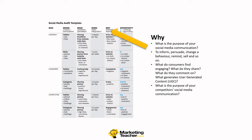Finally, Why. What's the purpose of your social media communication — is it to inform, to persuade, to change behavior, to remind, to sell? What do customers find particularly engaging? What do they share, comment on, and what generates UGC or user-generated content? And what's the purpose of your competitors' social media communication? Why may take a little more time, but once you dig down and get the meaning and purpose, this will start to create its own opportunities.